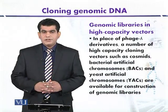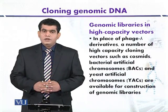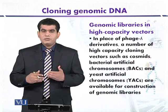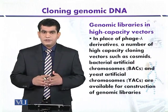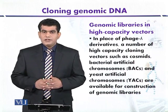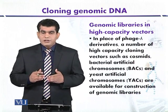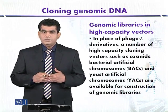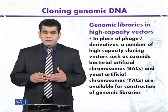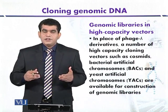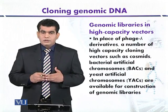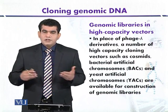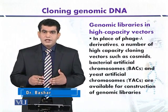Genomic libraries in high capacity vectors. In addition to lambda vectors, we can also use other vectors that can clone even larger DNA fragments. Different types of vectors are available that can accommodate comparatively larger DNA fragments. For example, we can use bacterial artificial chromosomes, P1-derived artificial chromosomes, or yeast artificial chromosomes.